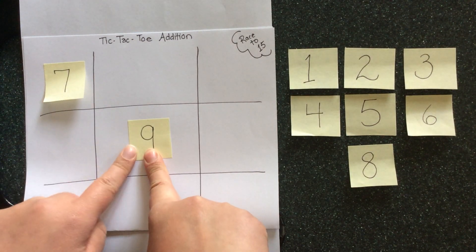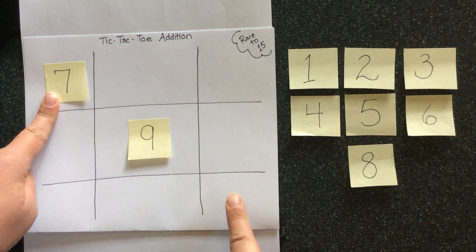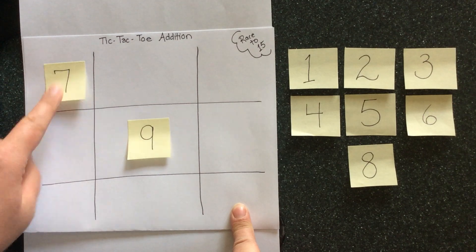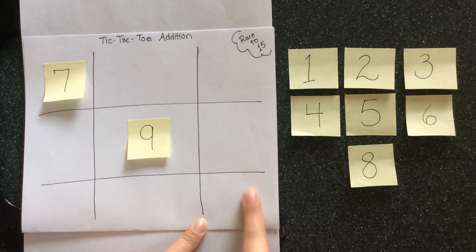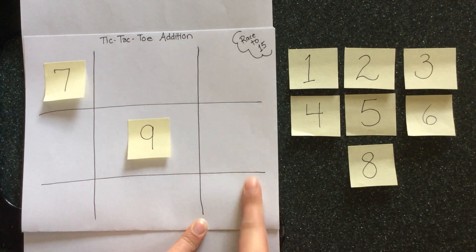So I just need to find a way for the other person not to reach 15. So 7 plus 9 is 16 which means that they can't place anything here that would be equal to 15.